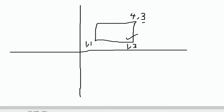Now using this third point we can calculate the area of the rectangle. The distance between 1,1 and 1,3 will be the length of the rectangle, and the distance between 4,3 and 1,3 will be the breadth. Using these two values we can calculate the area. To calculate the distance between two points, we have a formula.